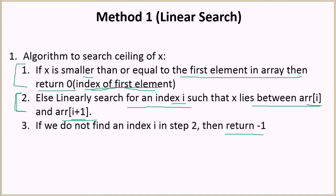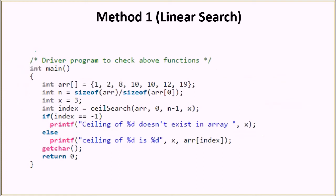Let's see the driver function. We have the input array, the size of the array, and the value x equal to 3. We call the ceiling search function with the array, the lower index, the higher index (length minus 1), and the value of x whose ceiling or floor is to be searched. The returned index value: if it is equal to -1 then the ceiling doesn't exist, otherwise we print the value.